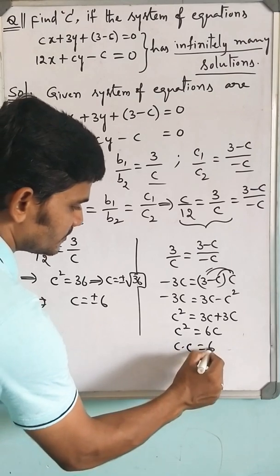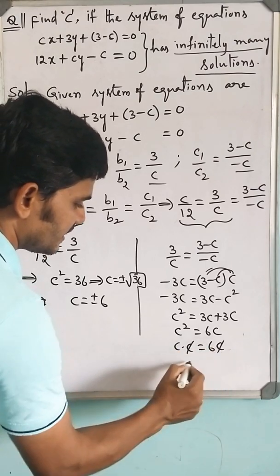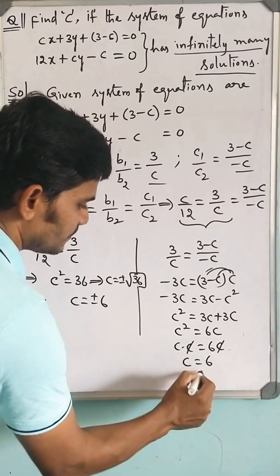C squared equals 6C. That is, C times C equals 6C. C gets cancelled, C equals 6.